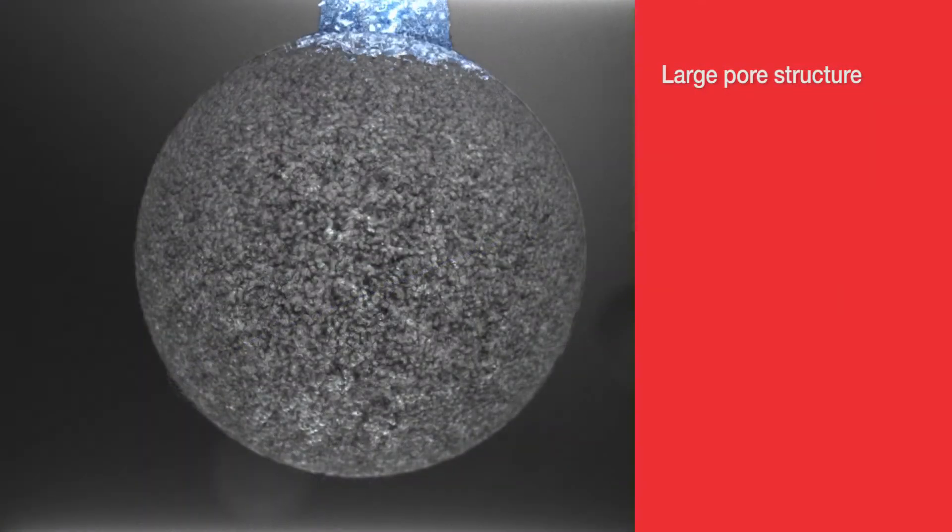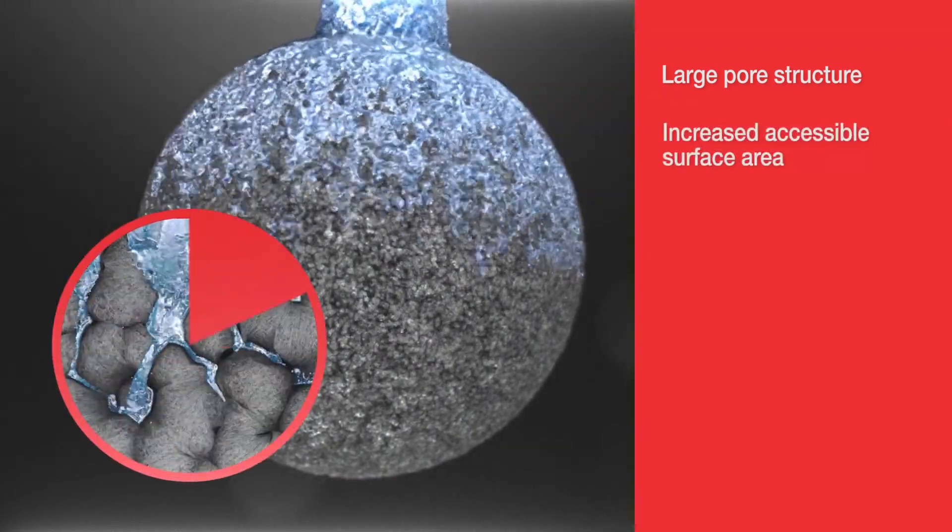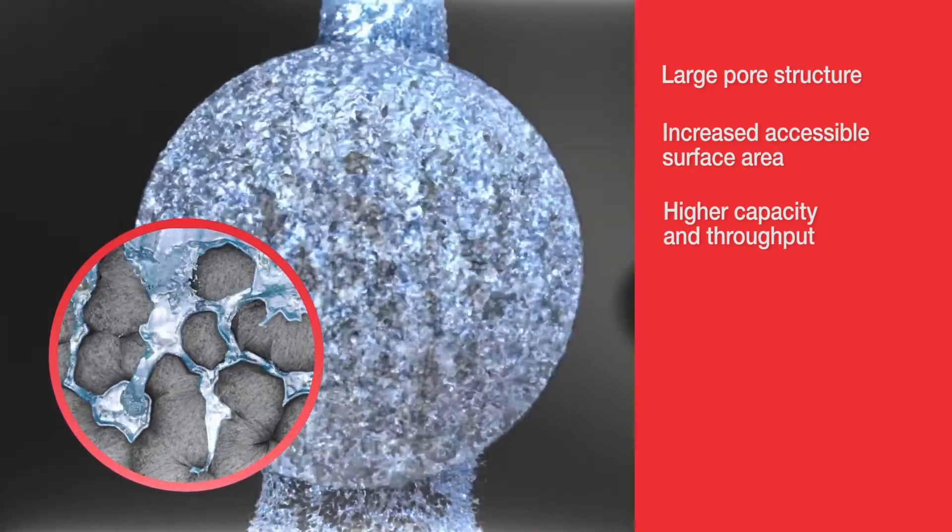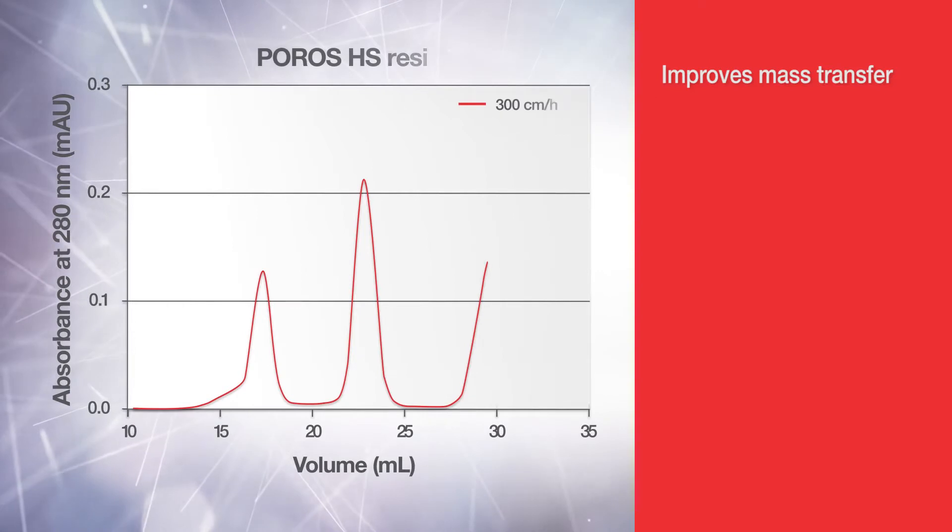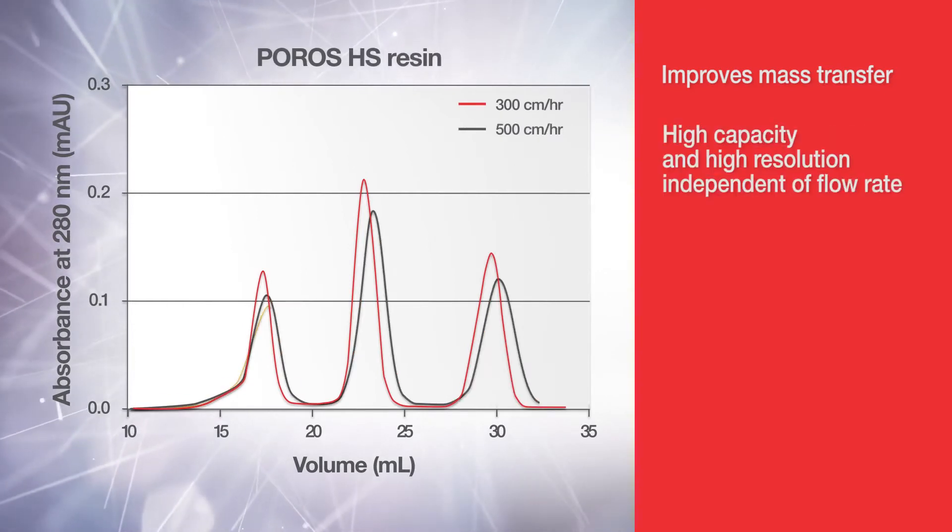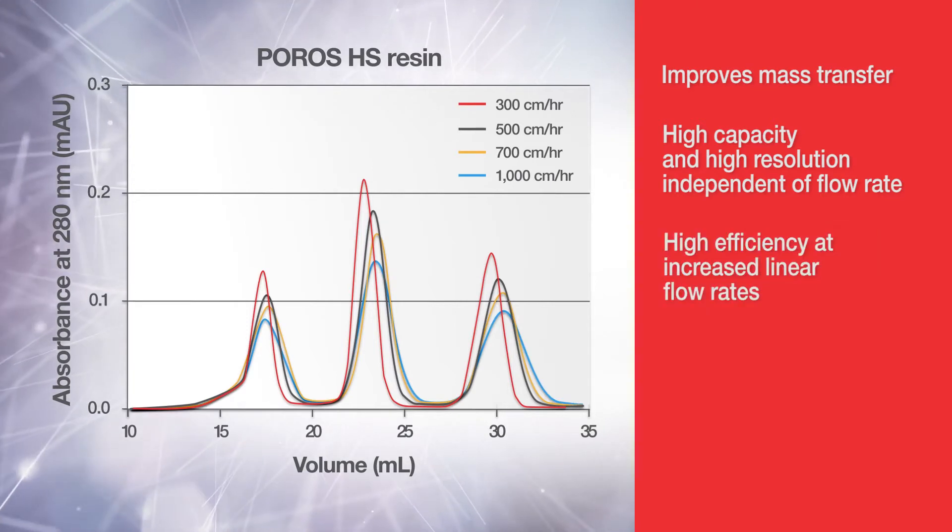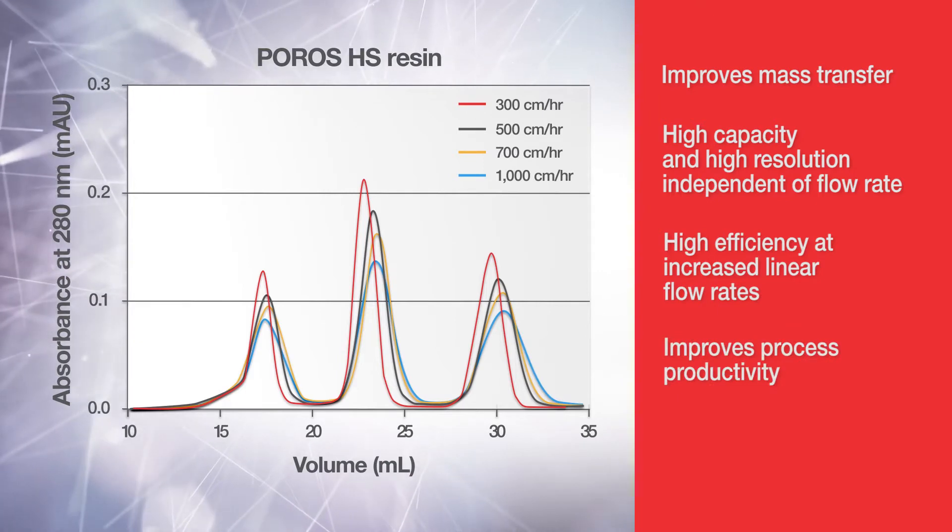The large pore structure of Porose beads provides increased accessible surface area that enables higher capacity and throughput. The large pore structure also improves mass transfer capabilities, maintaining high capacity and high resolution independent of the operating flow rate. This leads to high efficiency at increased linear flow rates and improves process productivity.